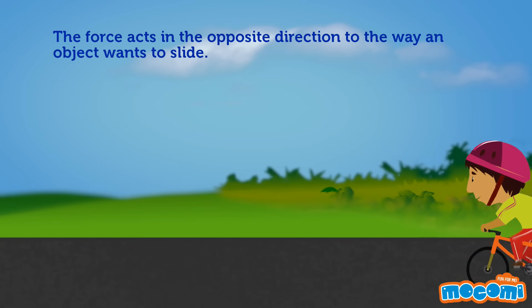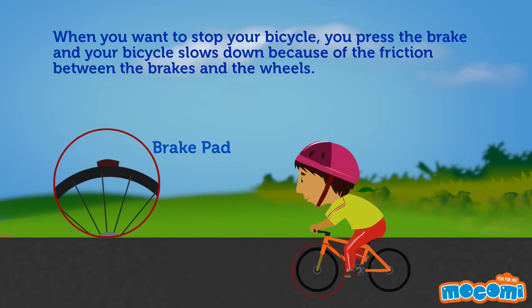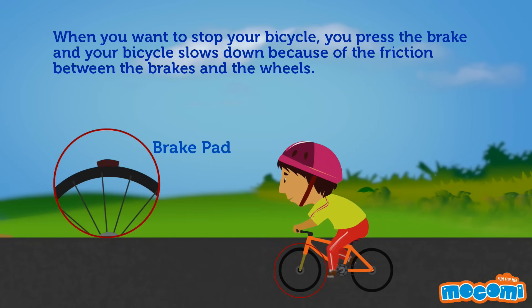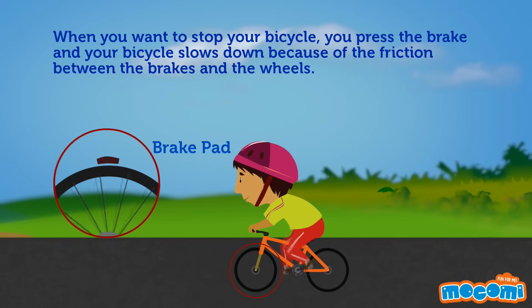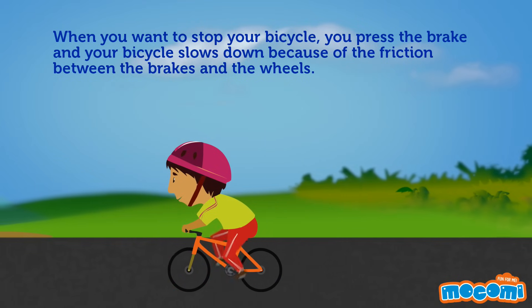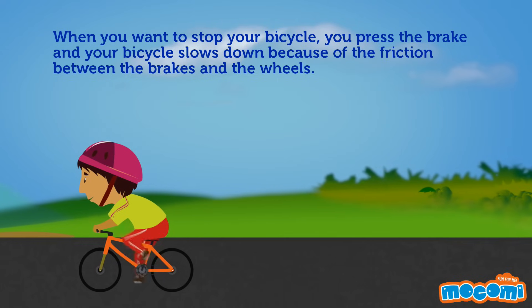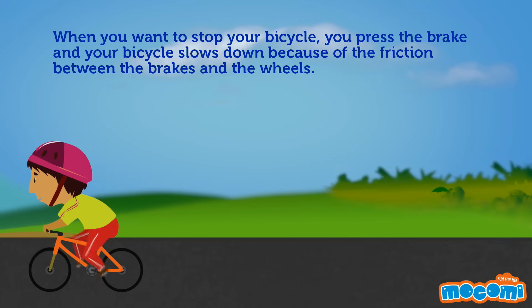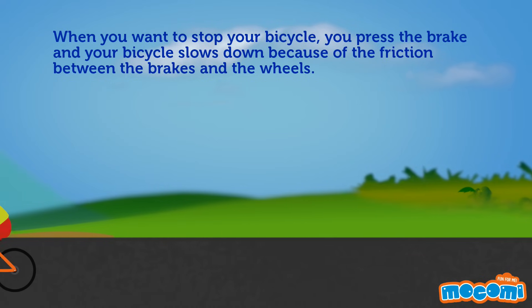The force acts in the opposite direction to the way an object wants to slide. When you want to stop your bicycle, you press the brake and your bicycle slows down because of the friction created between the brakes and the wheels.